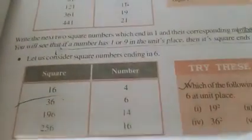In the similar way, only change the digit. If a number has 4 or 6 in unit place, then its square ends in 6. This is property number 5. Understood?